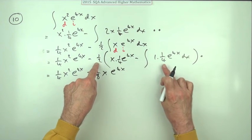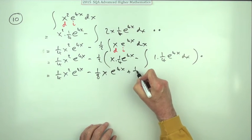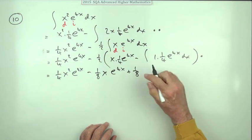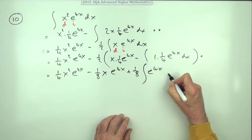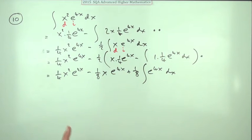And that'll be plus an eighth of the integral. We'll have to take a bit off of view I'm afraid. The integral of e to the 4x dx. Almost there.